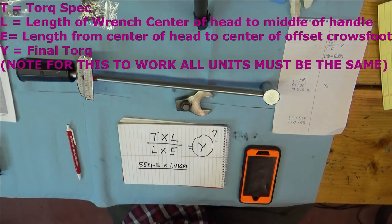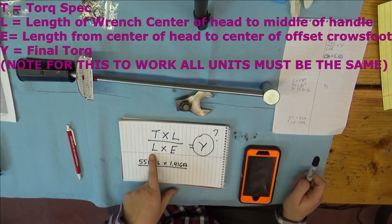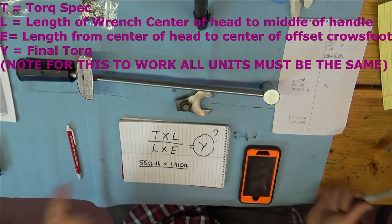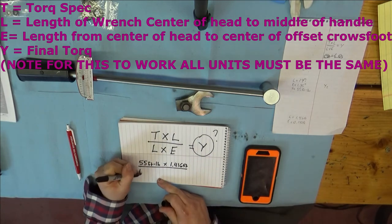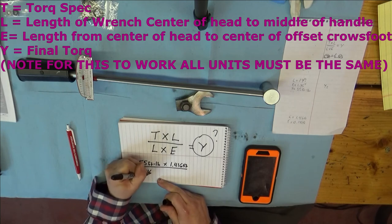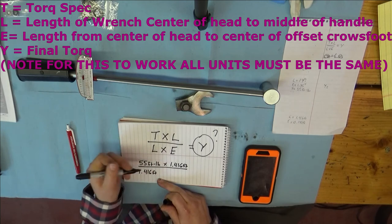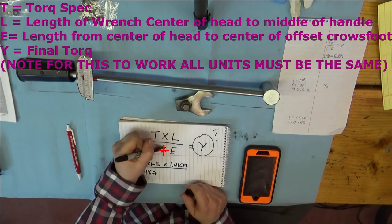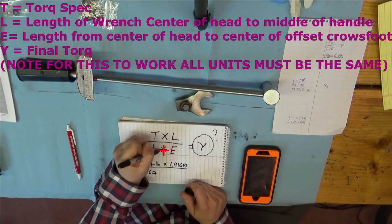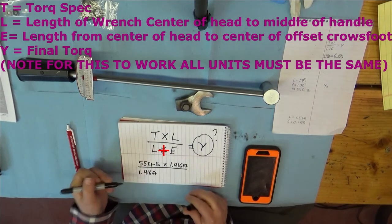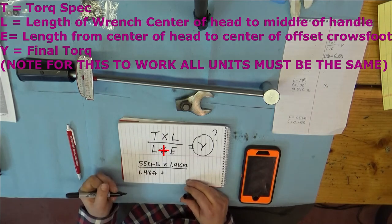All right, so there's the top part. Our bottom part is our length again. So 1.416 feet. And I made an error. This is not a times. This is a plus. That's a plus sign. So plus E.